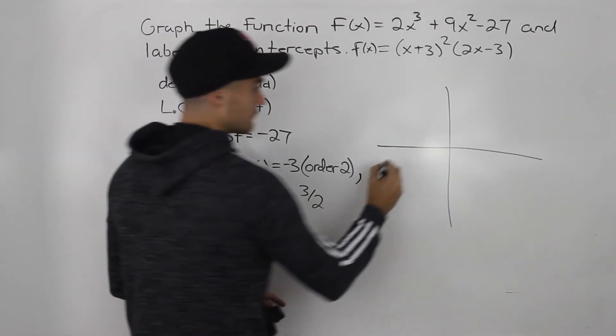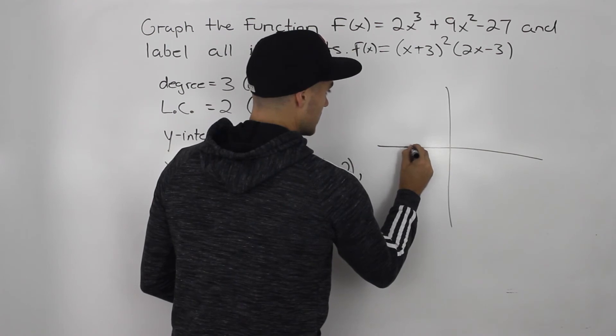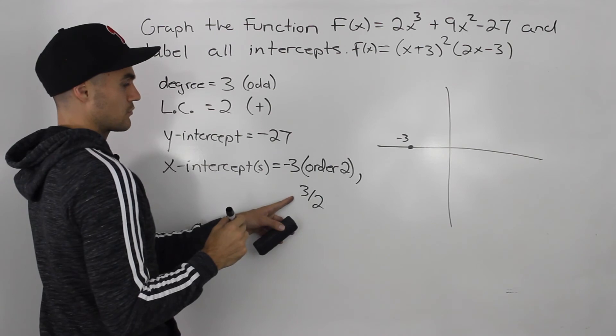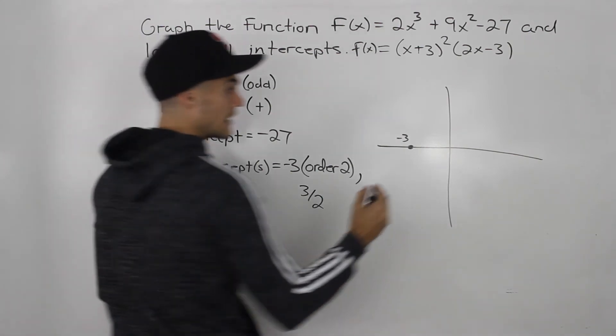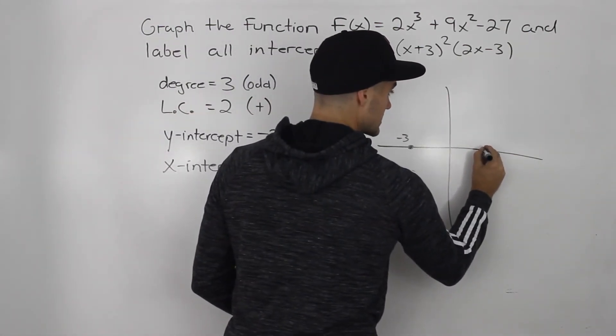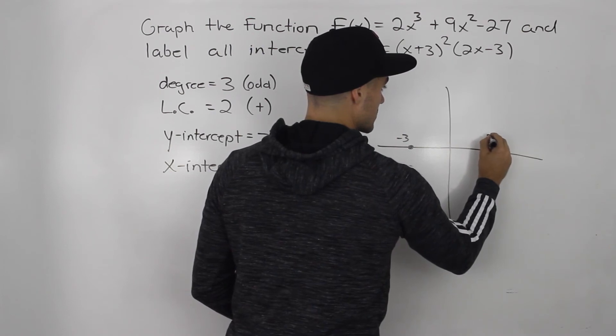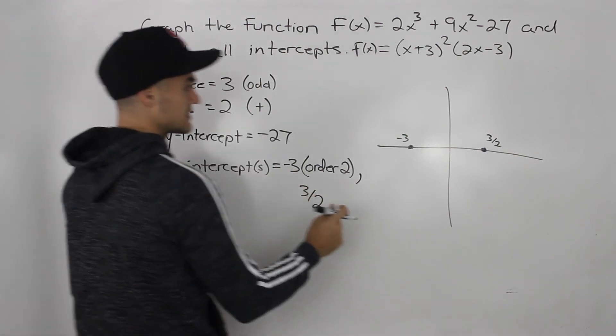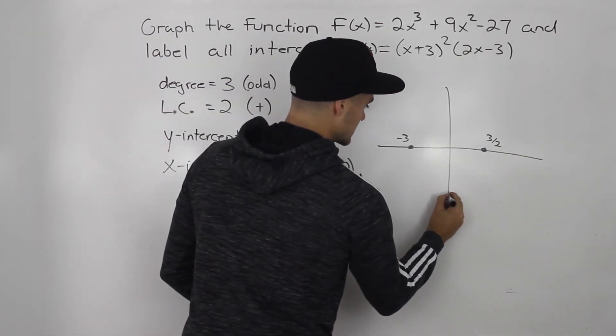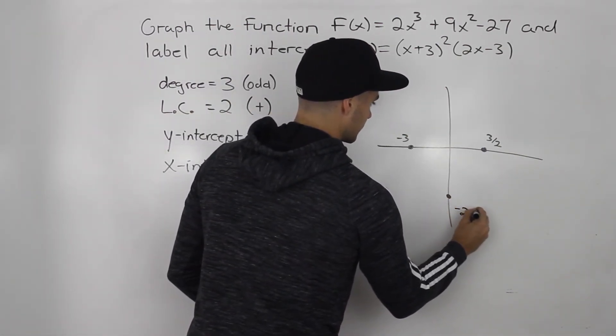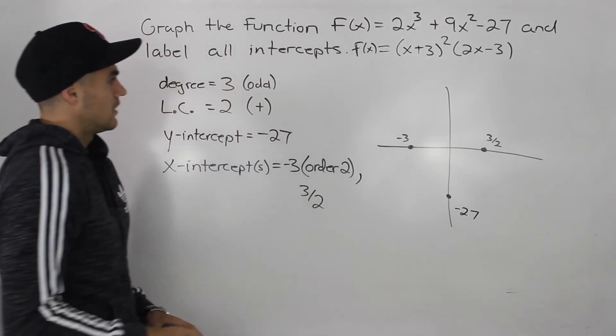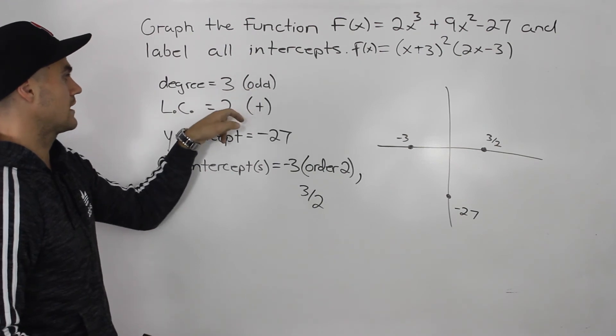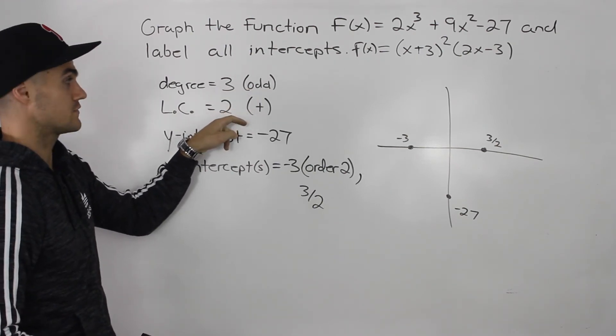So we have an x-intercept at negative 3. That would be here. And then we have an x-intercept at 3/2, or 1.5. So that would be like here. We also have a y-intercept at negative 27. So let's say that's like down here. And we know that this has an odd degree, a degree of 3, and a positive leading coefficient of 2.